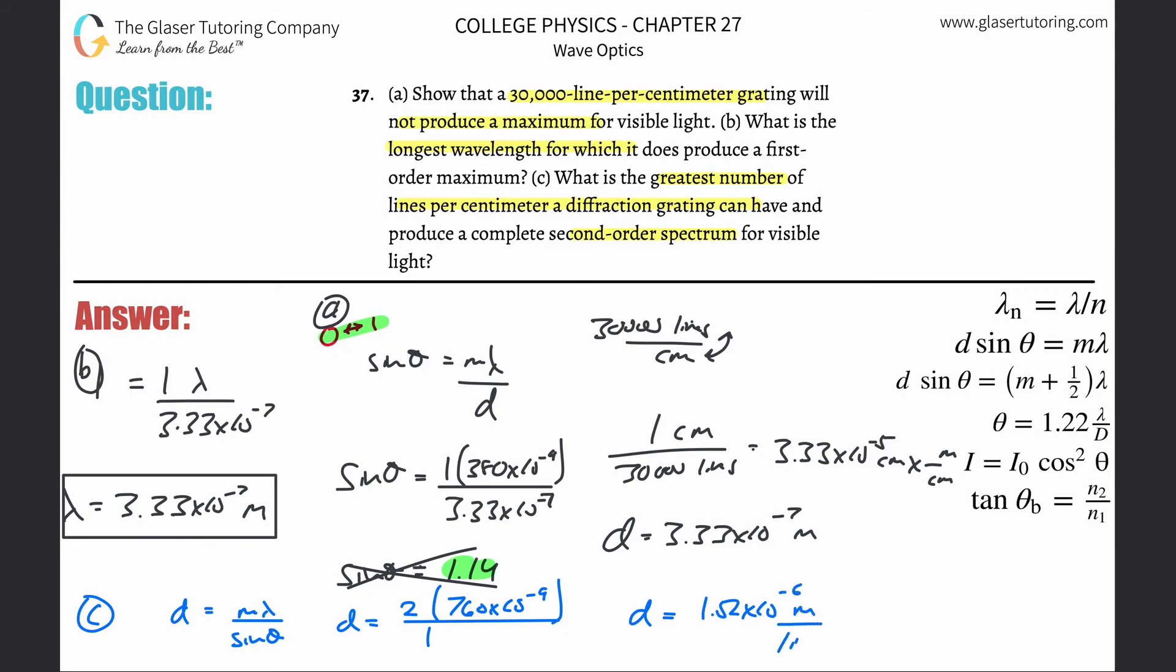But we don't want to know meters per line. We want to know lines per centimeter. So just flip it. For every single line, there is 1.52 times 10 to the minus 6 meters. This would be line per meter. But I don't want to know line per meter. I want to know line per centimeter. So meter on the top, centimeter on the bottom, one meter is for every 100 centimeters. See you later, meter. And now just do the division. So it's basically 1 divided by, now parentheses, that value you just found, multiply that by 100. And then bada bing, bada boom. There we go. So this is going to be 6.58 times 10 to the third. And that's lines now per centimeter.